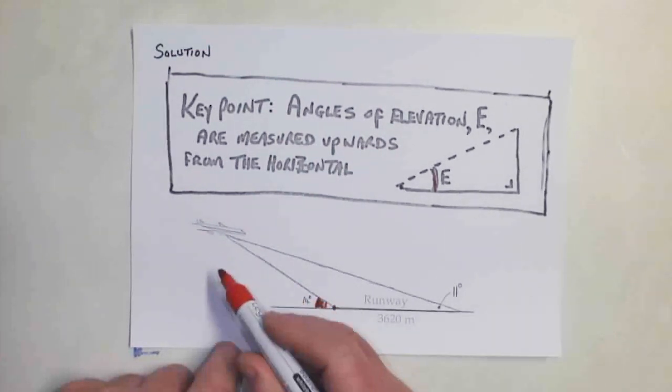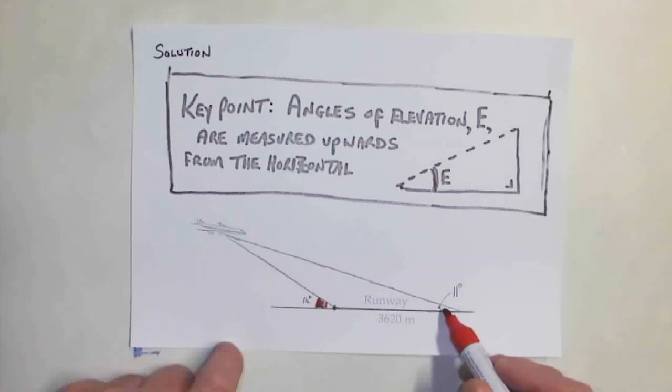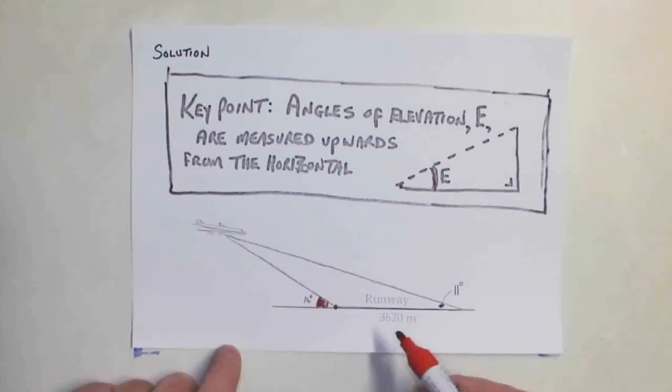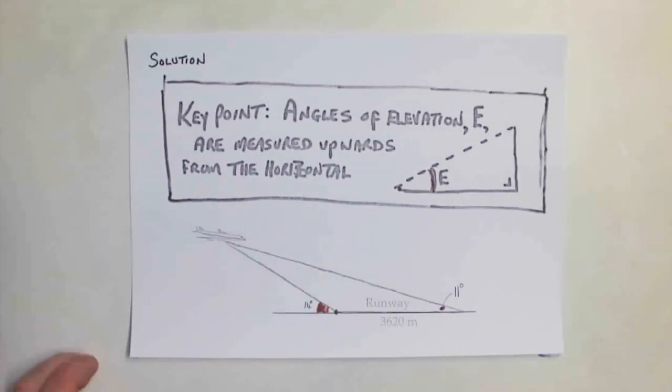When you're on the far end of the runway here, the angle is 11 degrees. So those are the two bits of information that you have from the question.